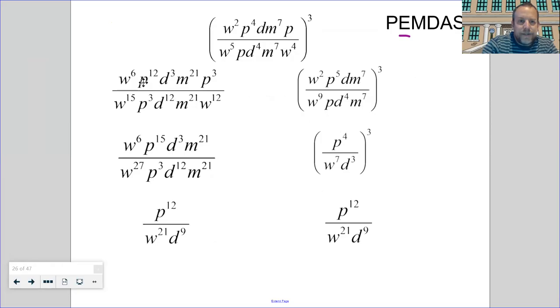The next thing I did was combine the numerator, and I looked and I was like, oh, I've got a P to the 12th and a P to the third. That turns into a P to the 15th. Same thing on the denominator. I had W showing up twice, so that's W to the 27th. And then I just cancel. I use law two. The W's cancel. There's 21 leftovers on the bottom. The P's cancel, 12 on the top. The D's cancel, 9 on the bottom. The M's completely cancel each other out.